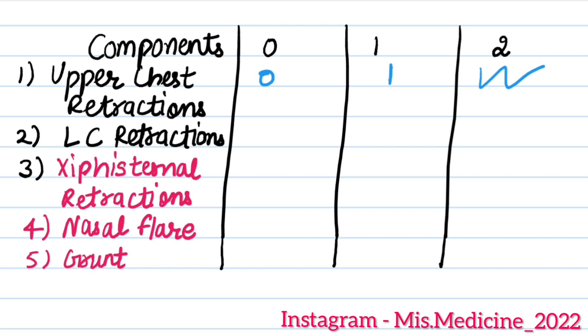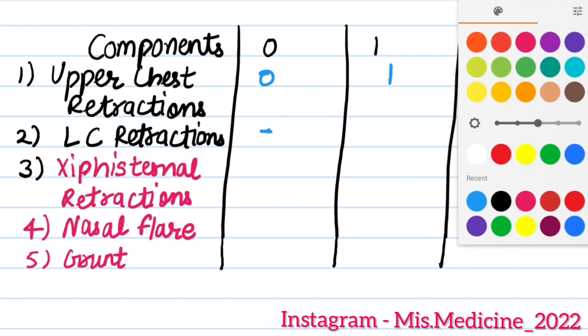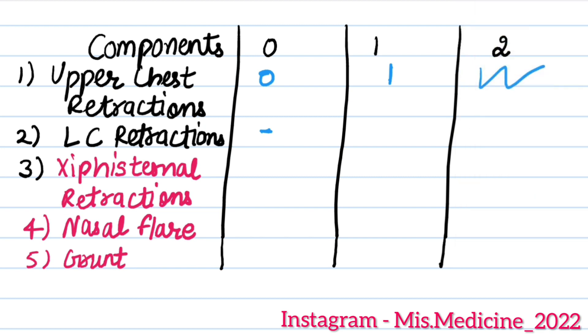Next is the lower chest retraction. If it is absent, it means zero score. If it is minimal, then it is one score. If it is marked, then it is two.